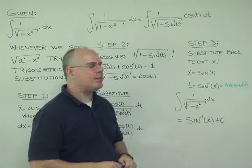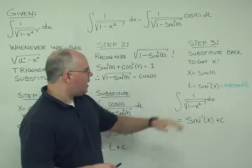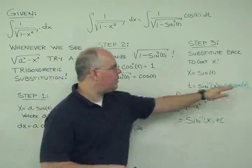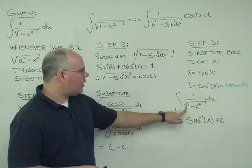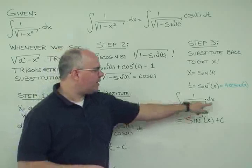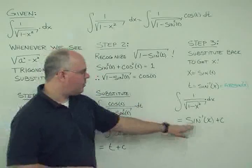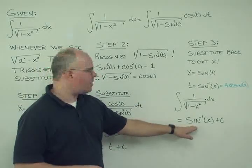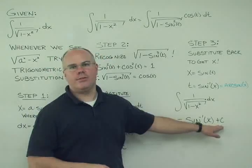If we go ahead and do this, we find that our integral of 1 over the square root of 1 minus x squared dx is actually equal to the inverse sine or arc sine of x plus some integration constant.